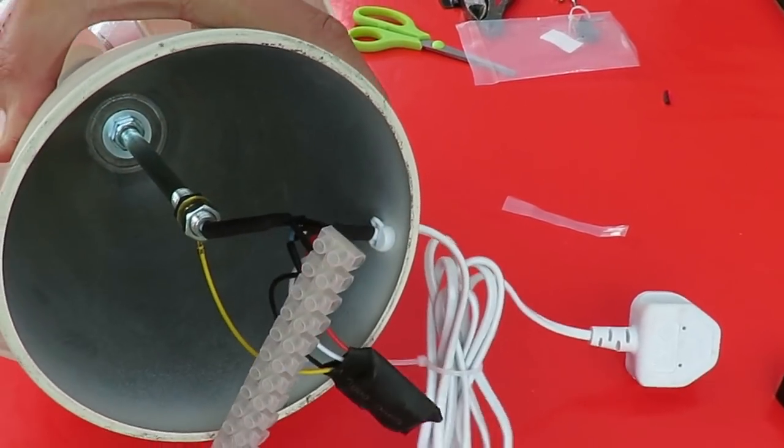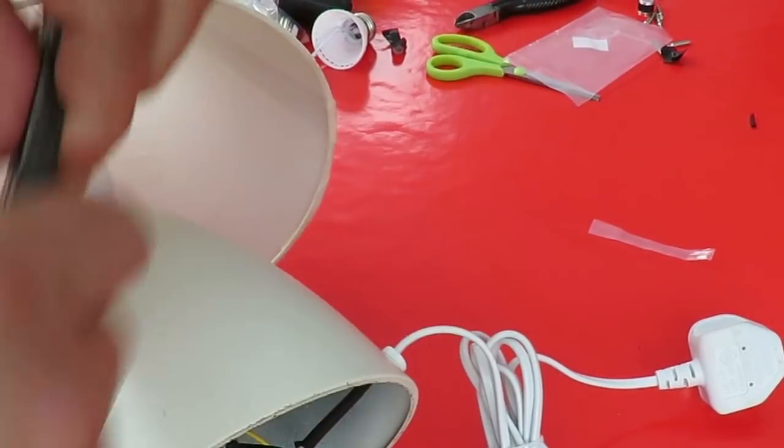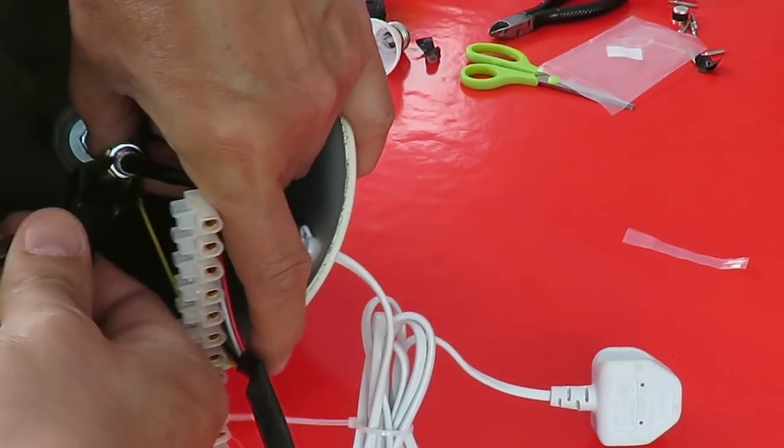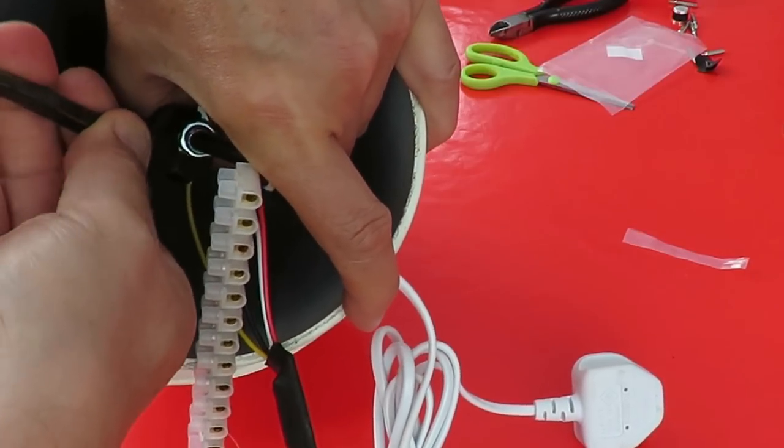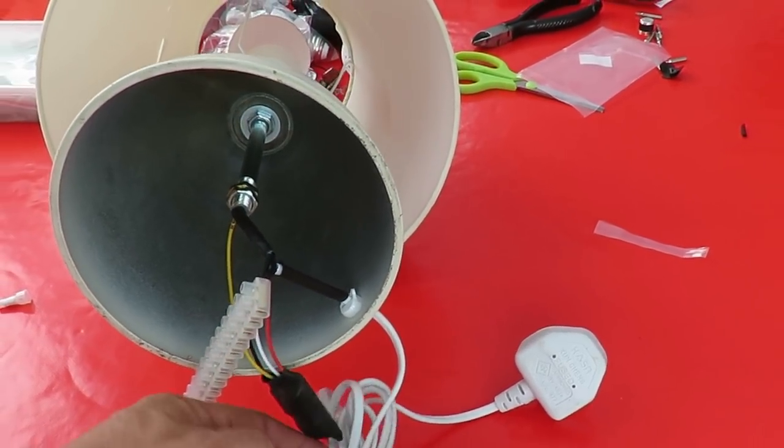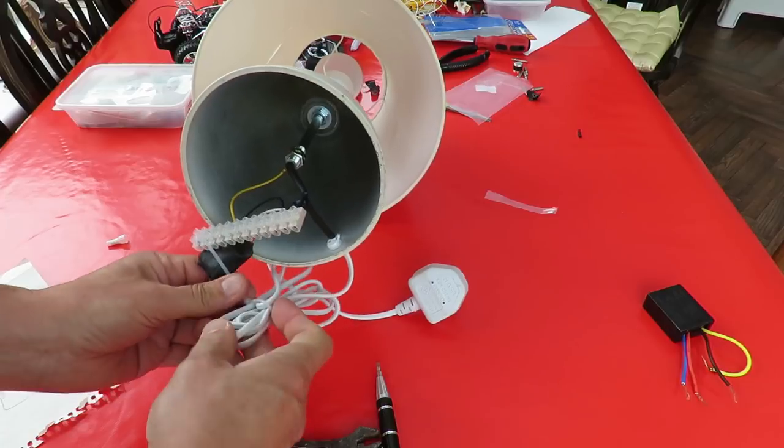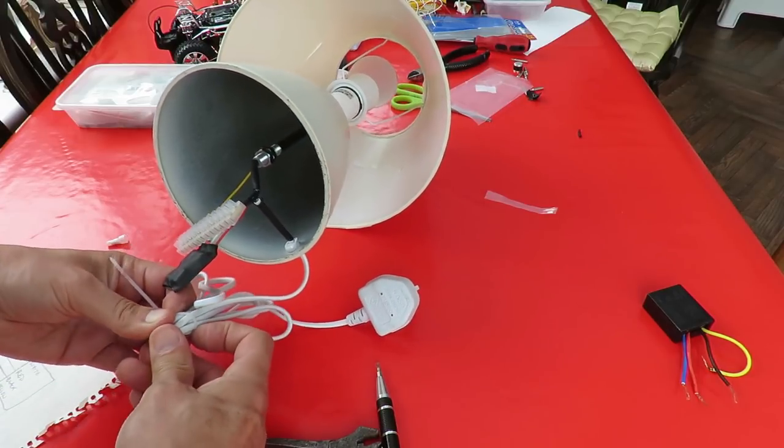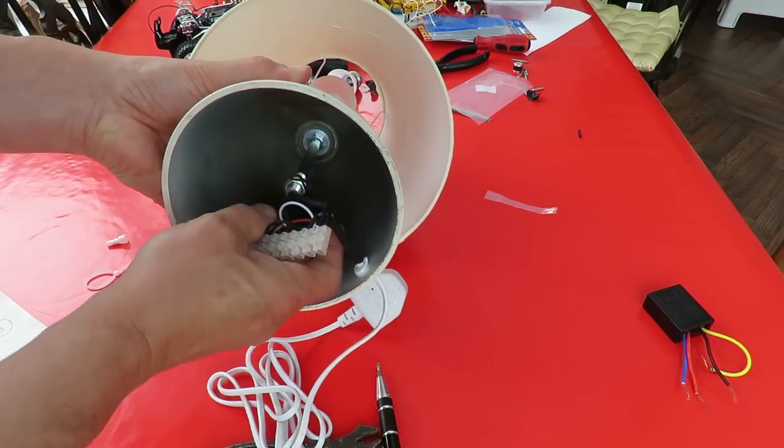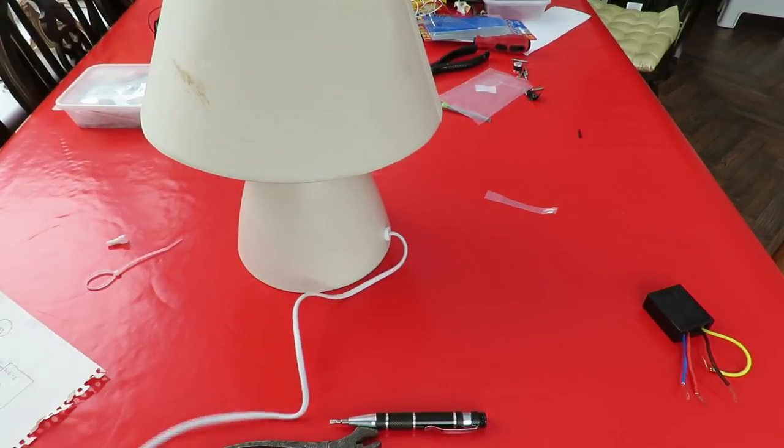So there we are, that's wired up. We need to tighten this up. So that should now work. Obviously we should put the cover back on the bottom and strap that up out the way and trim that off, but for demonstration purposes we'll leave it exactly as it is.